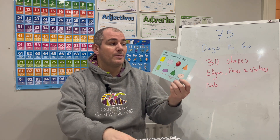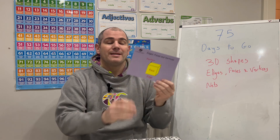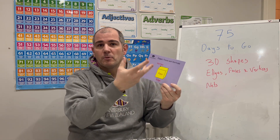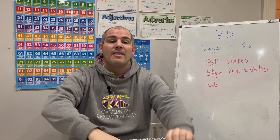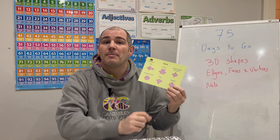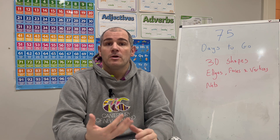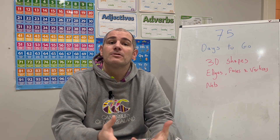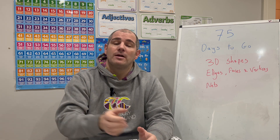If you've got the revision cards, card number 26 has a recap of the names of 3D shapes. Card number 27 has a recap of what a vertex is — or vertices if you've got more than one — your faces and edges. Card number 28 is a recap of some key nets you need to know. We'll go through all of these and I'll give you some questions to practise yourself, so feel free to pause the video at certain times.